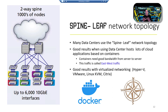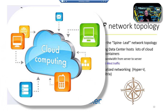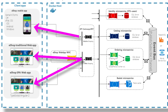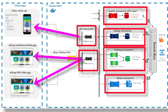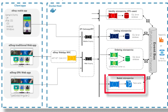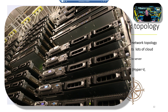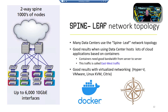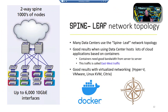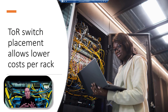Many data center designs use spine-leaf network topology. It gets great results when the data center hosts lots of cloud-based applications, especially containers. Containers can be spread across many servers — for example, an online website's microservices handling card authentication, inventory, website content, card processing, and cart generation can be spread across containers on three or four servers, all plugged into the same switch. That traffic is east-west. You also get great results with virtualized networking using Hyper-V, VMware, Linux KVM, and Citrix with spine-leaf topology.